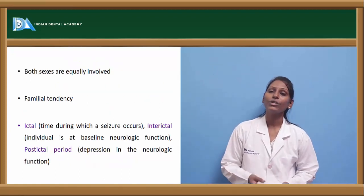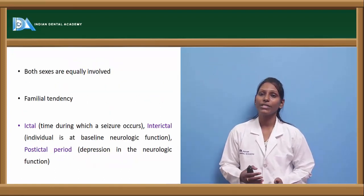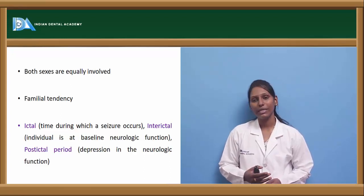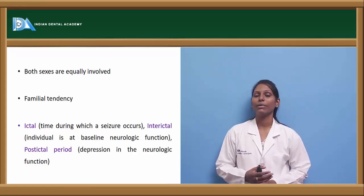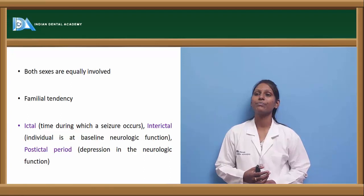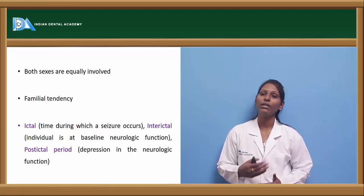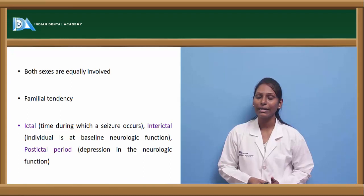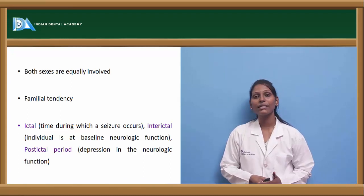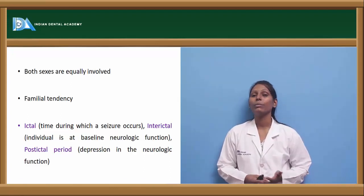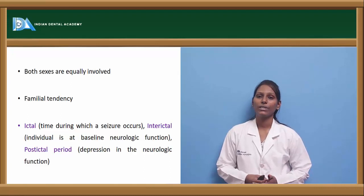Coming to the epidemiology, both sexes are involved and familial tendency is usually seen in epileptic patients. Younger children are more commonly involved compared to adults, and in some studies women are more commonly involved than men. However, there is equal predilection for both sexes.